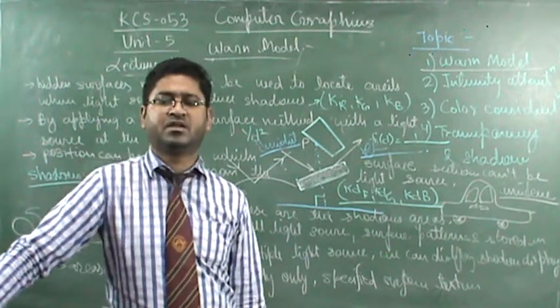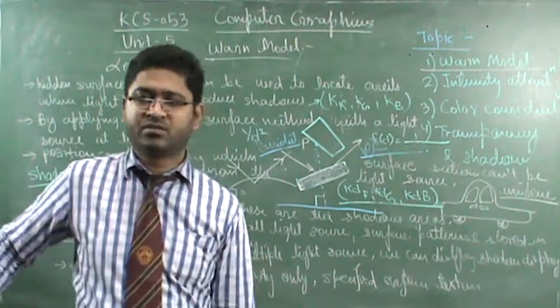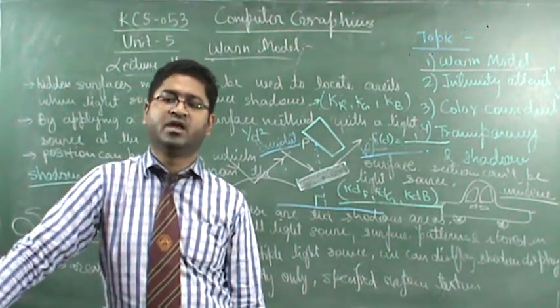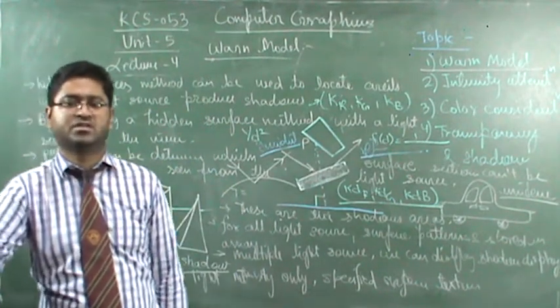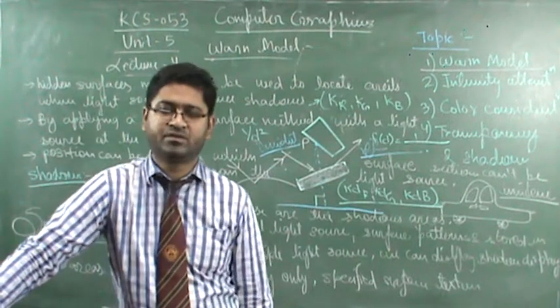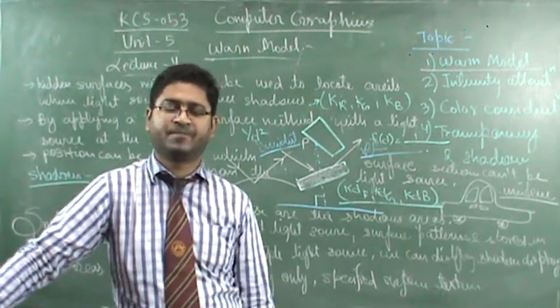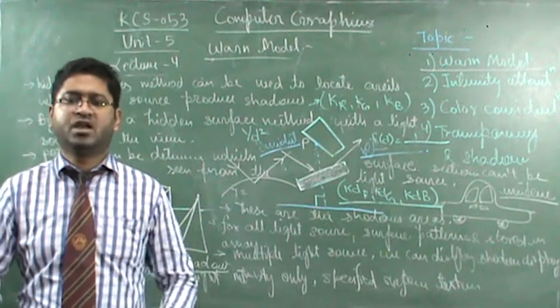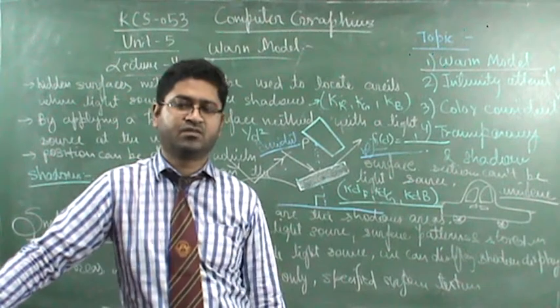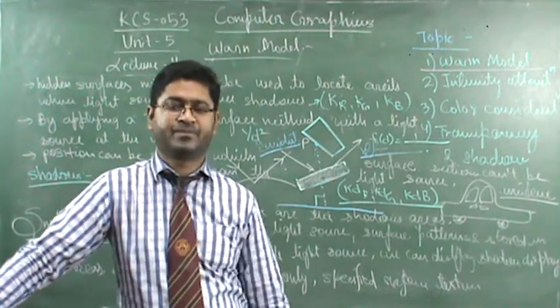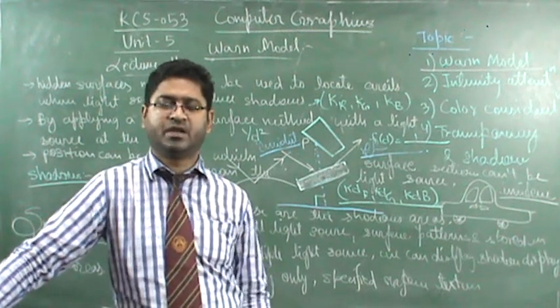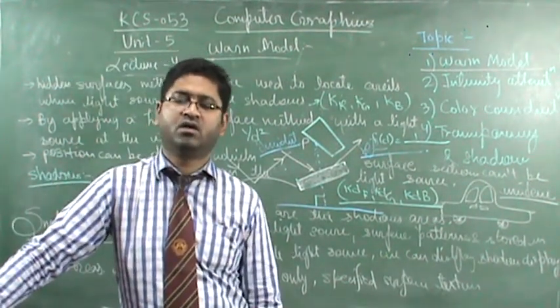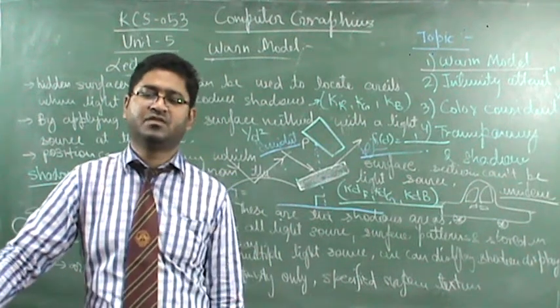The hidden surface method can be used to locate areas where light sources produce shadows. By applying a hidden surface method with a light source at the view position, we can determine which surface sections cannot be seen from the light source—these are the shadow areas. Once we have determined shadow areas for all light sources, the shadows can be treated as surface patterns and stored in pattern arrays. We can display shadow areas with ambient light intensity only, or combine the ambient light with specified surface textures.